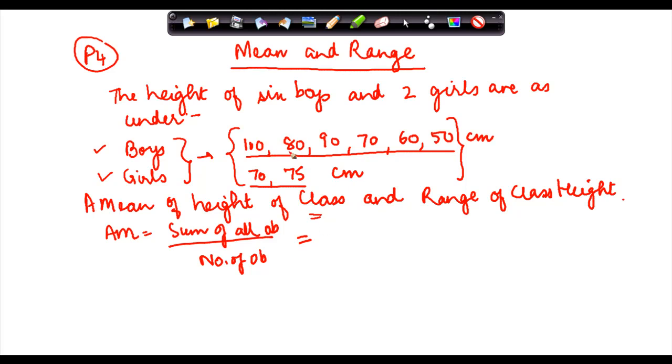If I take a sum of all these numbers, this will give me hundred, plus eighty, plus ninety, plus seventy, plus sixty, plus fifty, plus seventy and seventy-five.